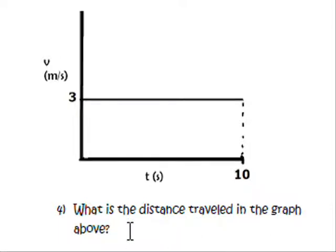So what is the distance traveled in the graph above? It would be 3 times 10 or 10 times 3 which gives you 30. And since it's distance it would be meters. So 30 meters would be the distance traveled.